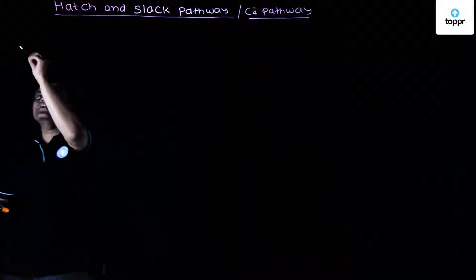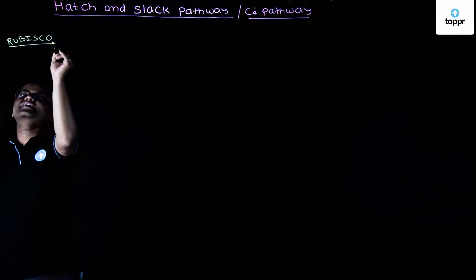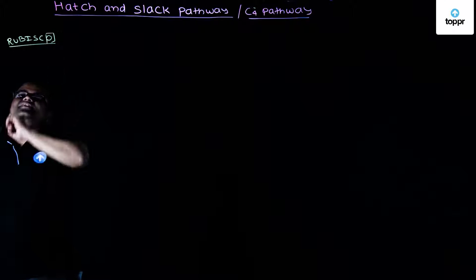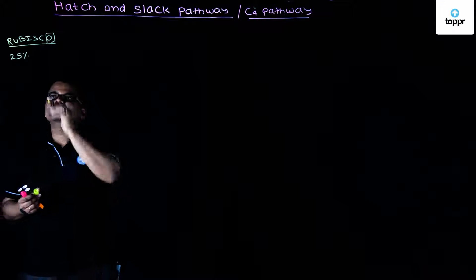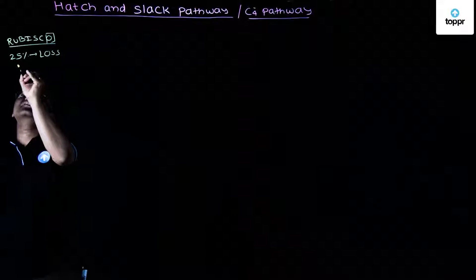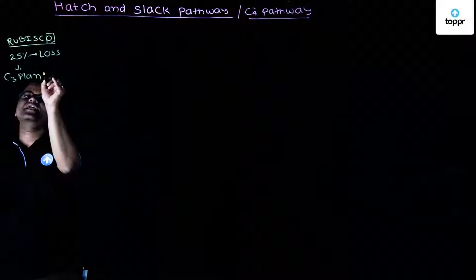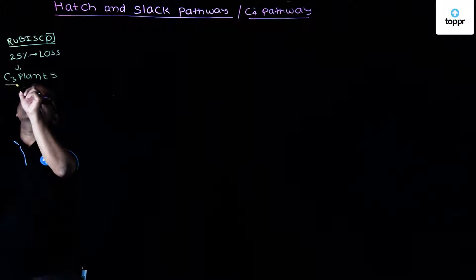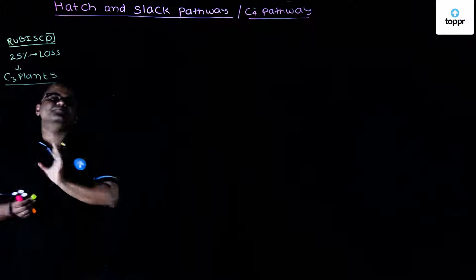In photorespiration, Rubisco — instead of adding carbon dioxide — adds oxygen, due to which there is a 25% loss of carbon. This phenomenon is very common in C3 plants. What is the meaning of C3 plants?